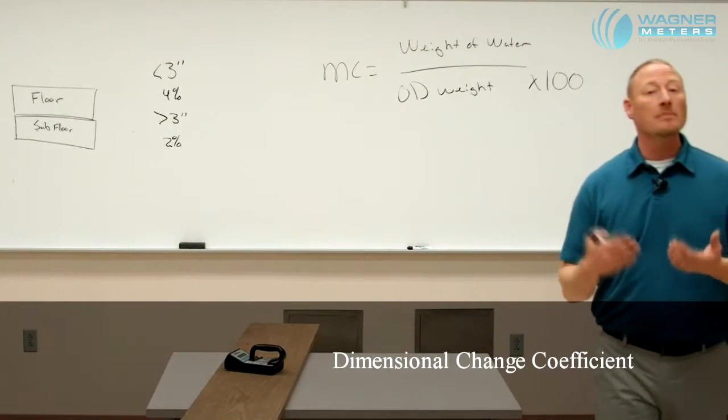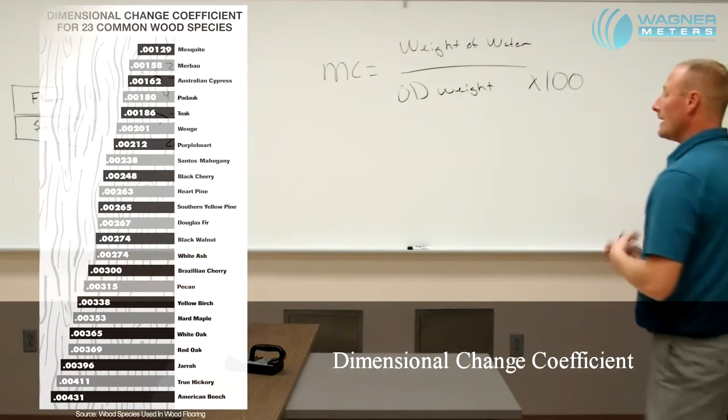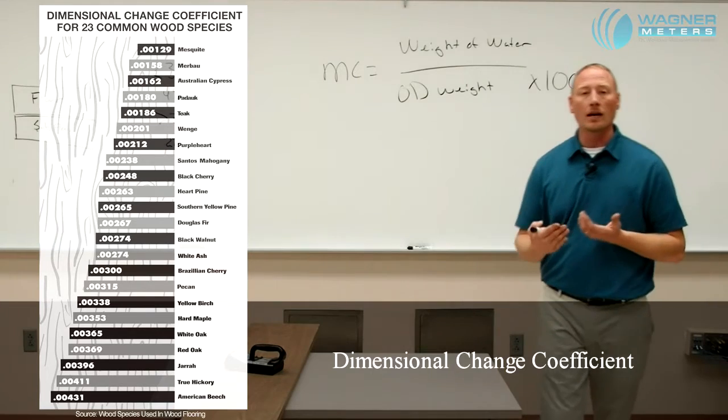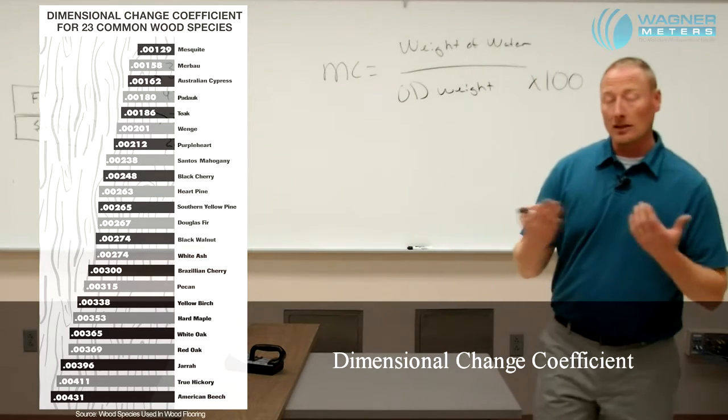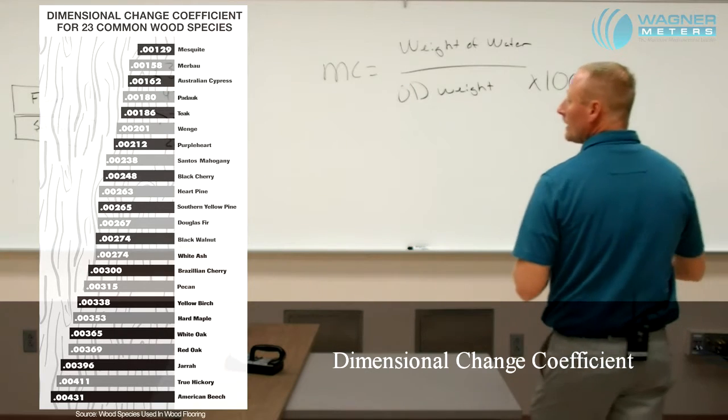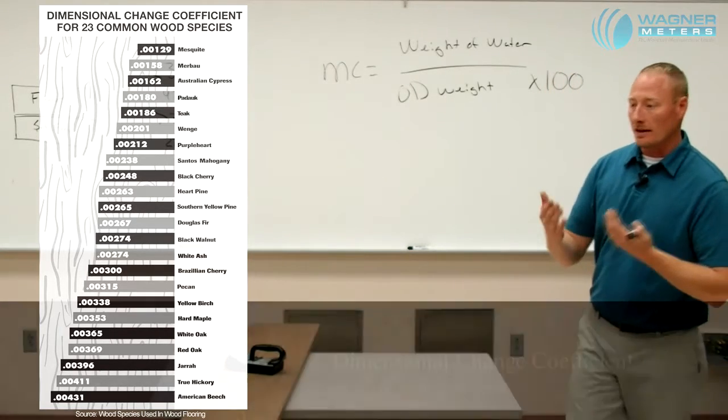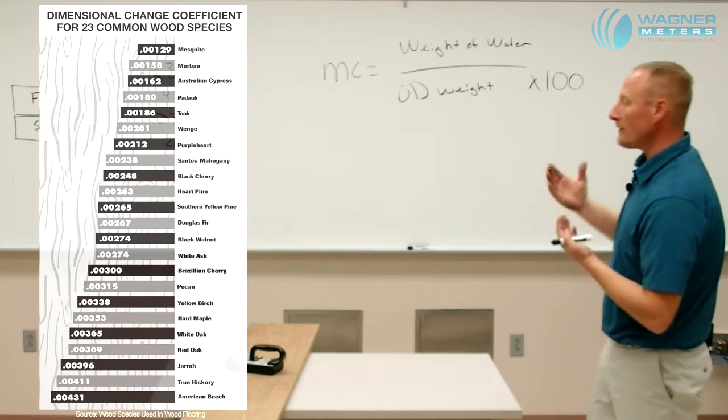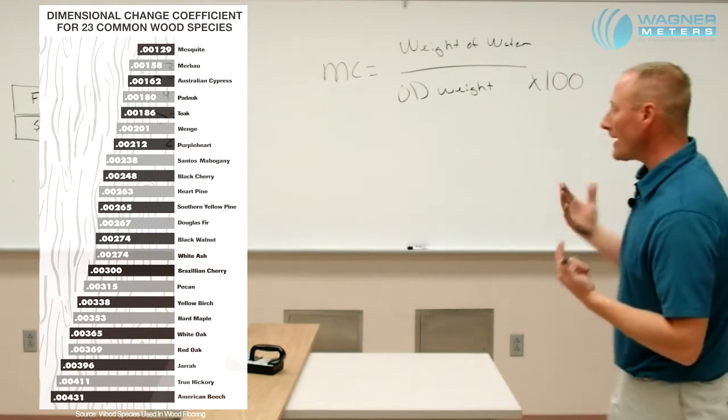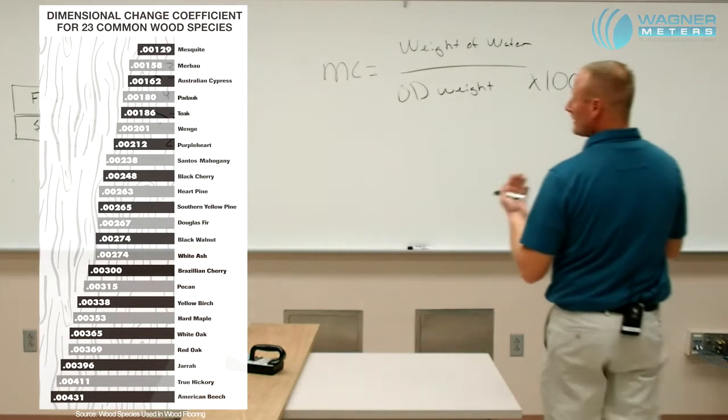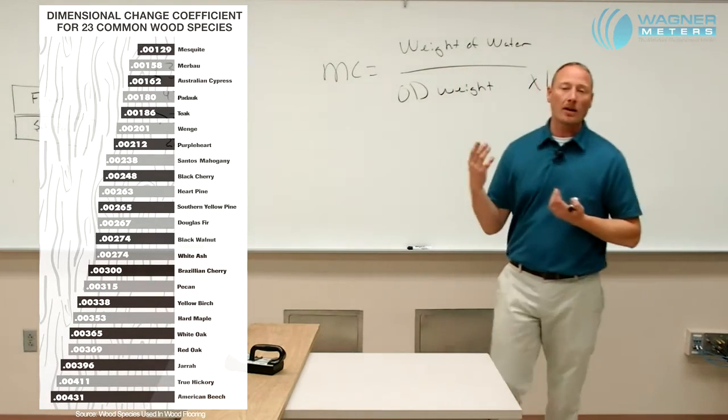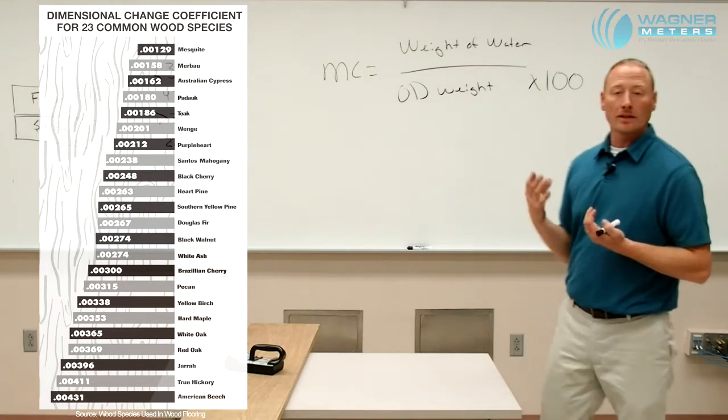And what we call that is the dimensional change coefficient. The dimensional change coefficient breaks down different species of wood and tells us how much each one of those species of wood is going to move. Wood can vary from 1.5 to three times differently in tangential from radial depending on the density of that material. By using a dimensional change coefficient table, we can accurately determine how much each one of those species is going to move.